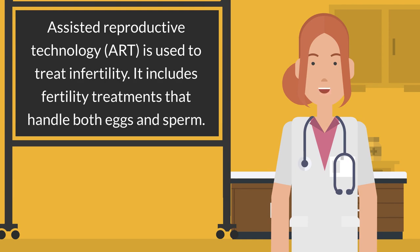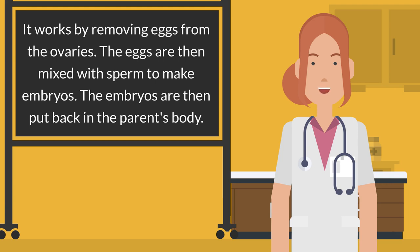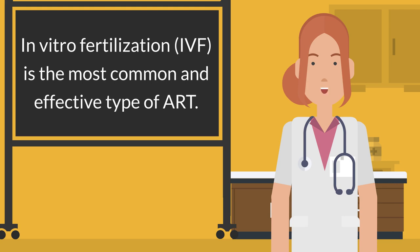Assisted Reproductive Technology, ART, is used to treat infertility. It includes fertility treatments that handle both eggs and sperm. It works by removing eggs from the ovaries. The eggs are then mixed with sperm to make embryos. The embryos are then put back in the parent's body. In vitro fertilization, IVF, is the most common and effective type of ART.